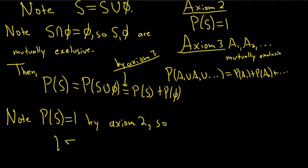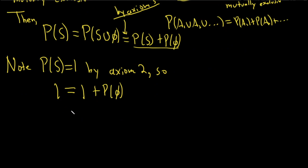So now what we can do is go back in here and plug in 1. So we have 1 equals 1 plus the probability of the impossible event or the empty set. And then we just subtract 1 from both sides. We have the probability of the empty set, and that is equal to 0.